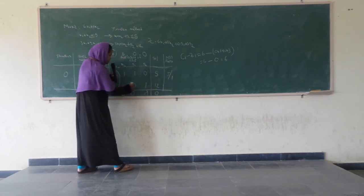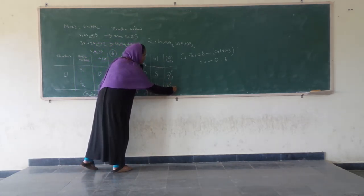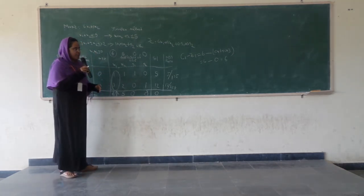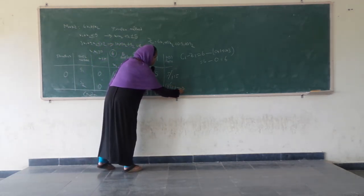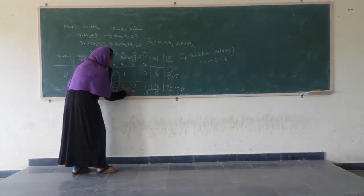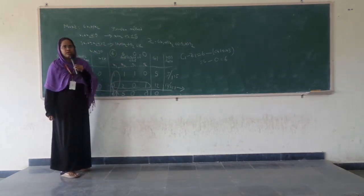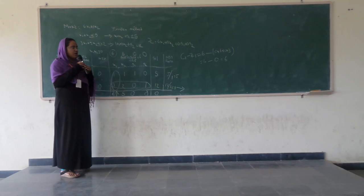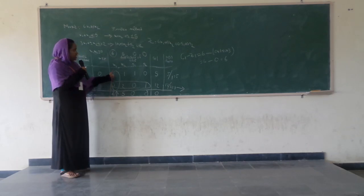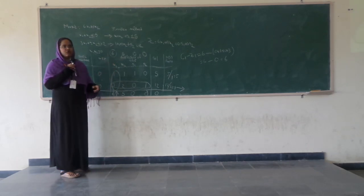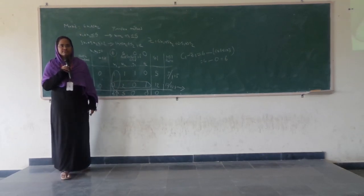Next, we consider the entering column values and divide the solution values by them to get the minimum ratio. The ratios are 5 divided by 1 = 5 and 12 divided by 3 = 4. The minimum value is 4, so that row is the leaving row or pivot row. We conclude that s2 is the leaving variable and x1 is the entering variable. We will continue the discussion in the next class.